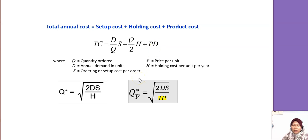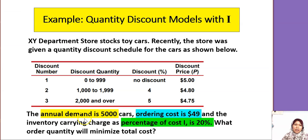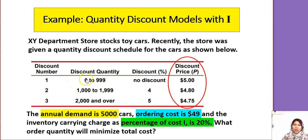In quantity discount there are two types of holding cost. Sometimes they give you the holding cost fixed for any price, and sometimes they give you a percentage of the price for the holding cost — that's H and IP respectively. I will give you an example of when IP needs to be used. This is a quantity discount example where there are different price offers and a range involved.